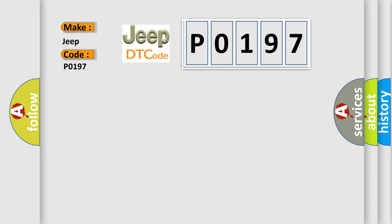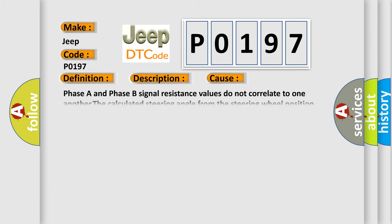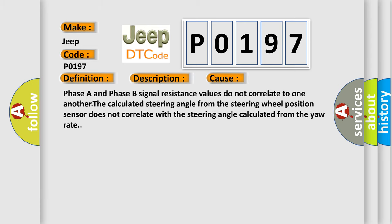The basic definition is: Steering position signal. Here is a short description of this DTC code. Ignition voltage is greater than 90 volts. This diagnostic error occurs most often in these cases: Phasor and phase B signal resistance values do not correlate to one another. The calculated steering angle from the steering wheel position sensor does not correlate with the steering angle calculated from the yaw rate.